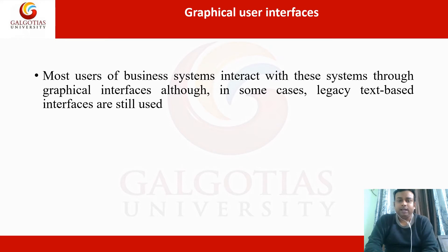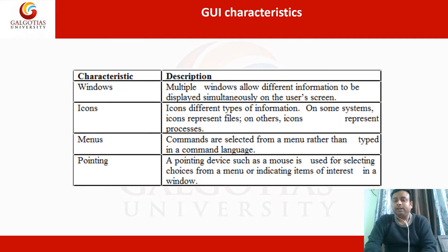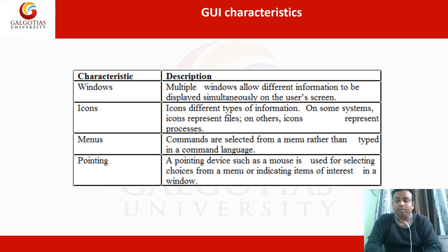Most users of business systems interact through a graphical interface, though in some cases text-based interfaces are still used. Nowadays in window systems we use graphical user interface, but text-based interfaces also still exist. One characteristic of window-based systems is that they follow WIMP-based interactions. WIMP is basically an abbreviation for Window, Icon, Menu, and Pointer.